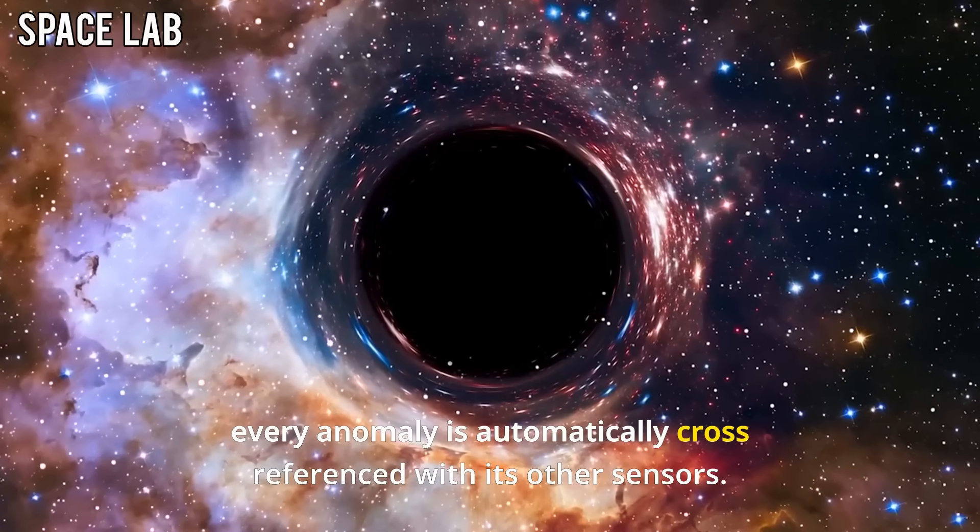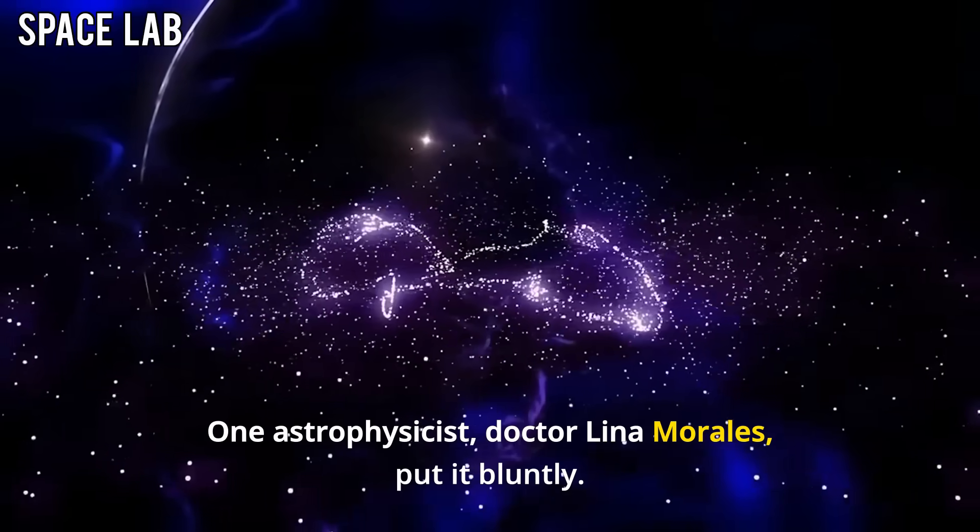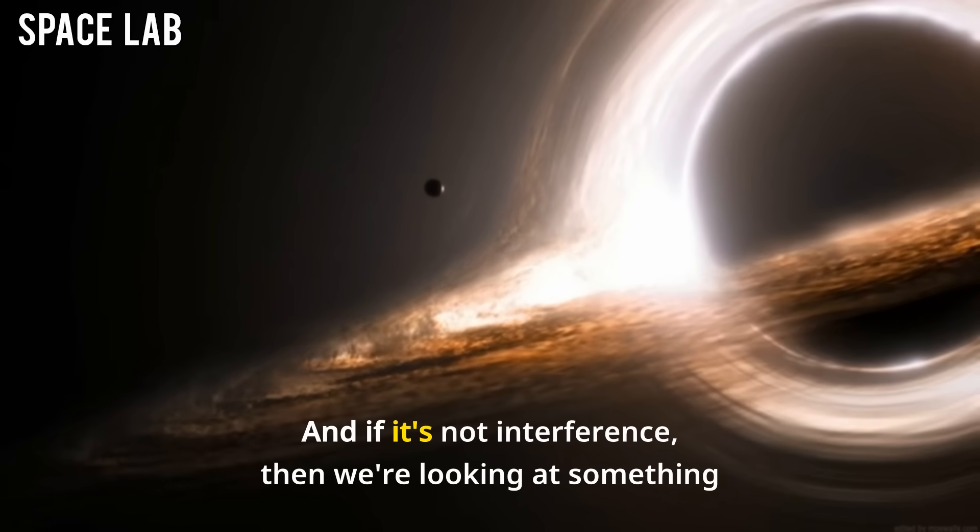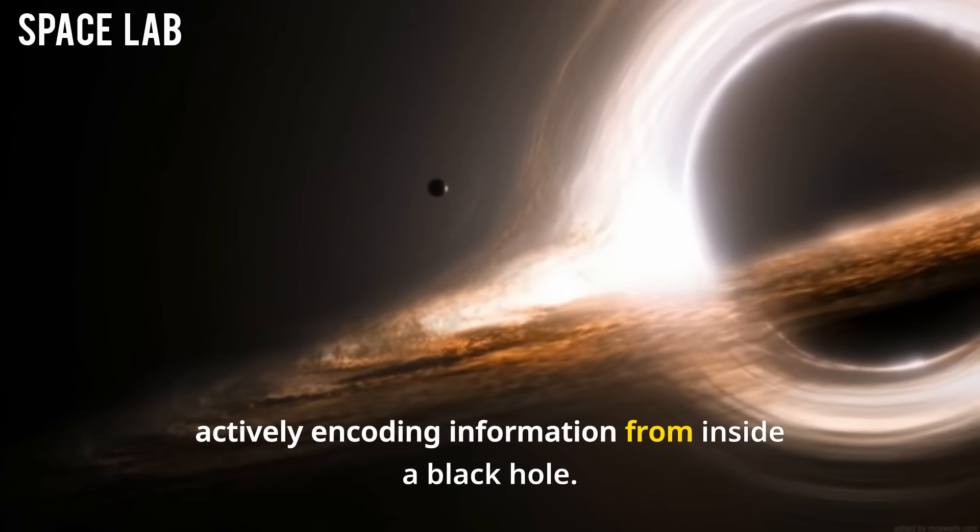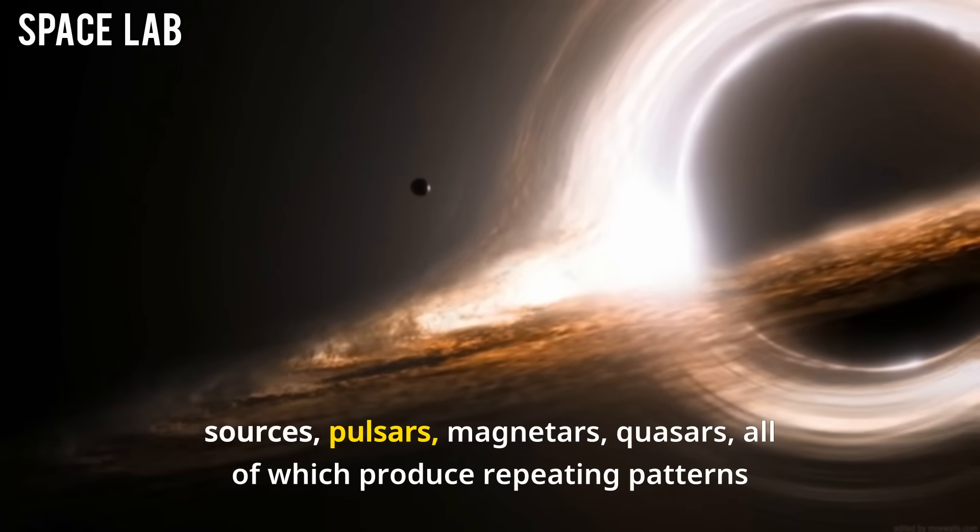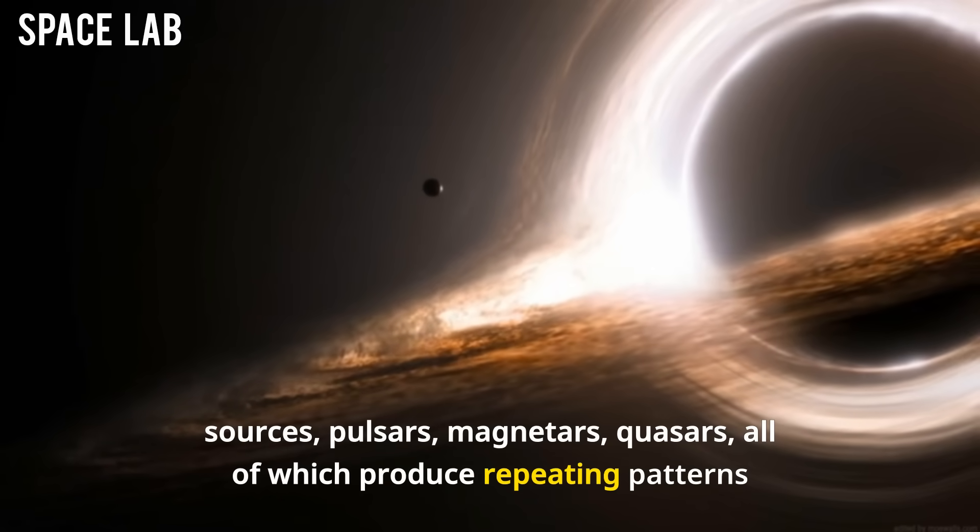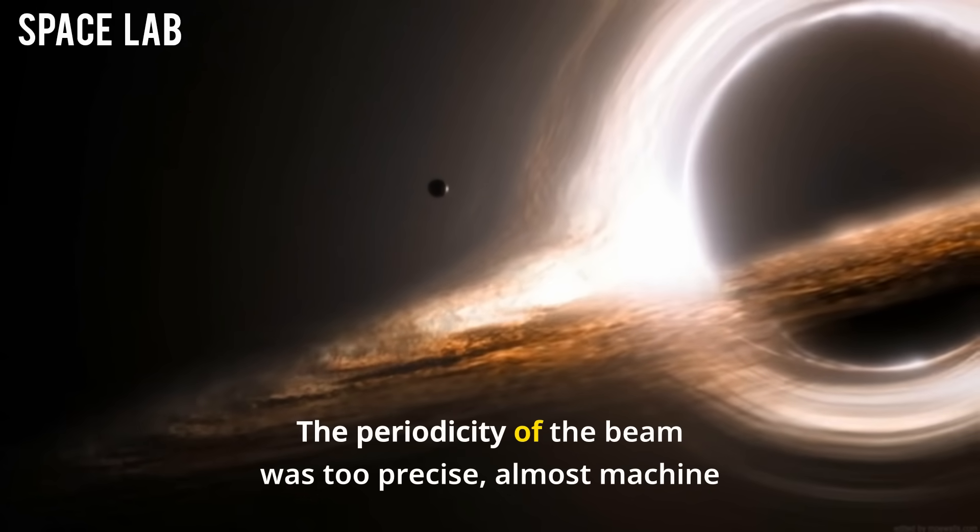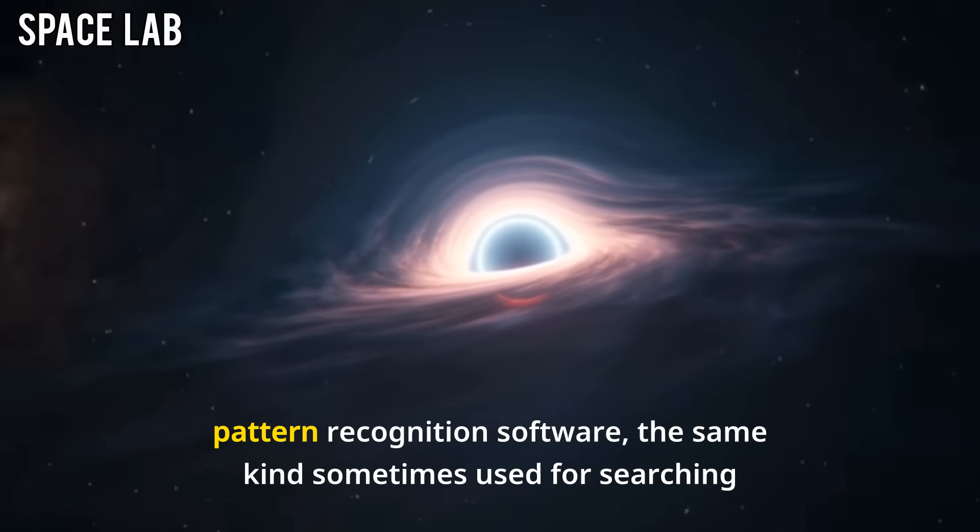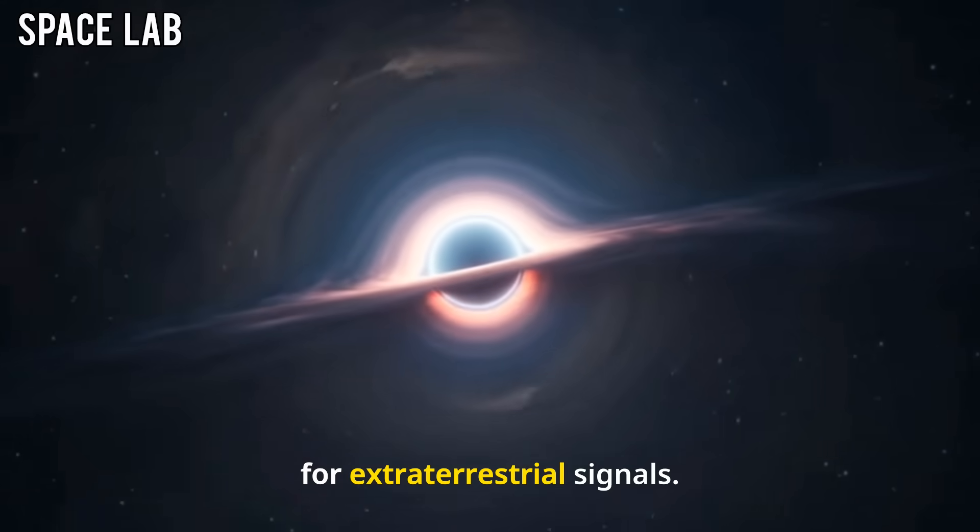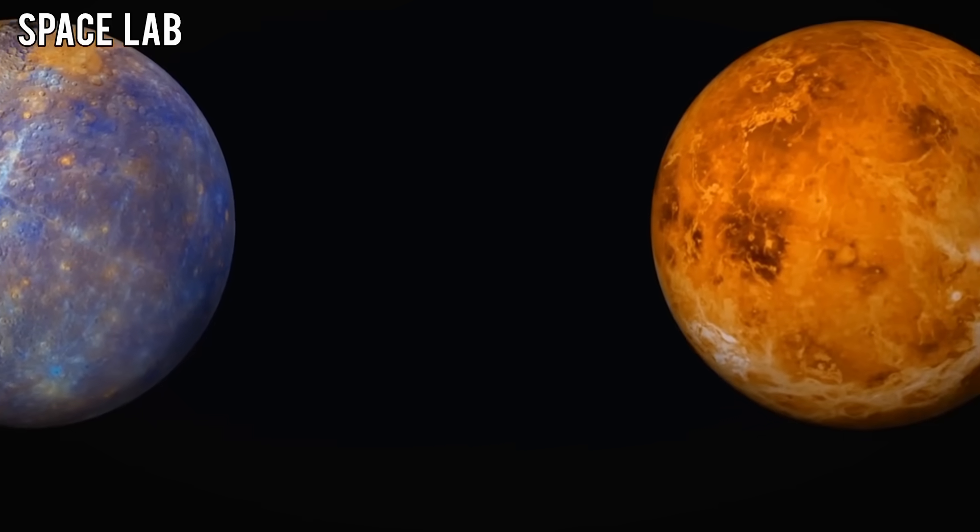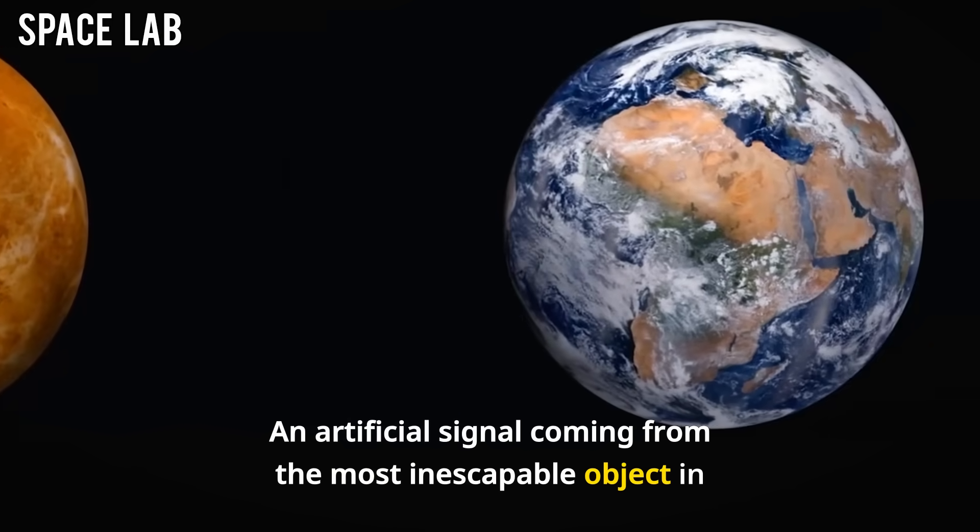One astrophysicist, Dr. Lina Morales, put it bluntly: If this is interference, then it's the most consistent interference in the history of astronomy. And if it's not interference, then we're looking at something actively encoding information from inside a black hole. The Webb team immediately compared the anomaly to known astrophysical sources - pulsars, magnetars, quasars, all of which produce repeating patterns of energy. None matched. The periodicity of the beam was too precise, almost machine-like. To test this, the data was run through AI-based pattern recognition software, the same kind sometimes used for searching for extraterrestrial signals. The results were chilling. The AI flagged the pattern as non-random and potentially artificial. An artificial signal coming from the most inescapable object in the universe.